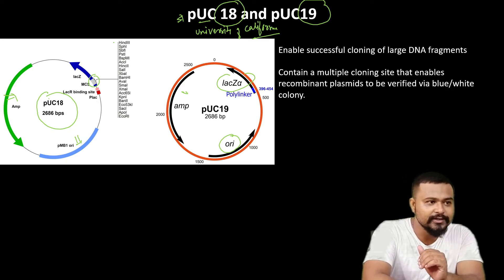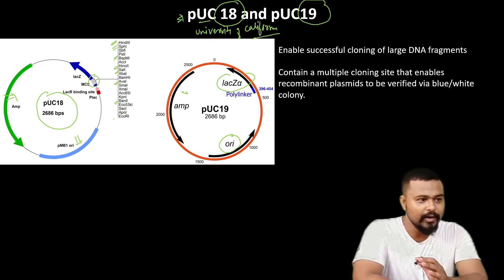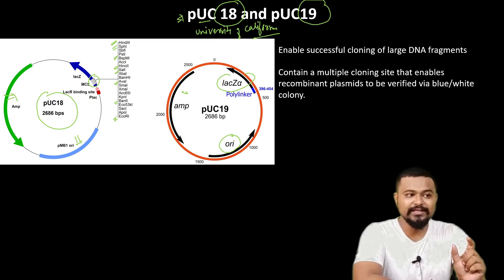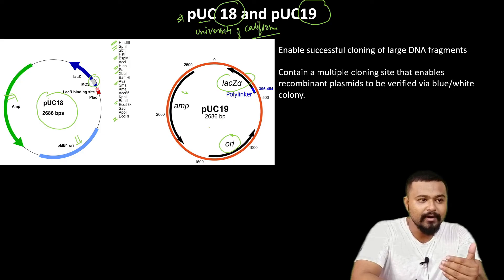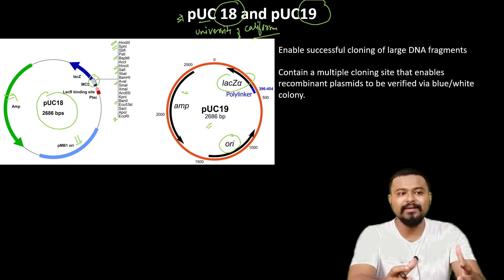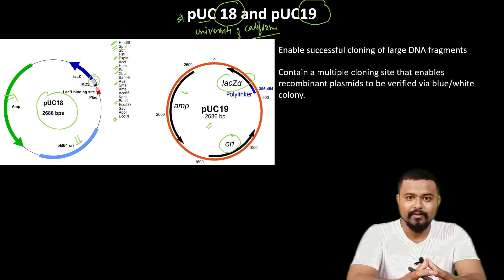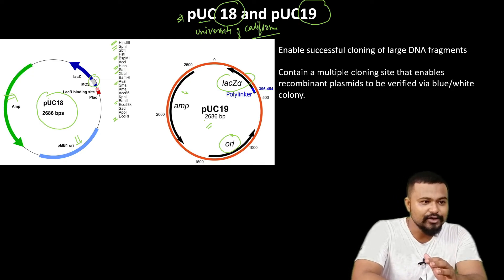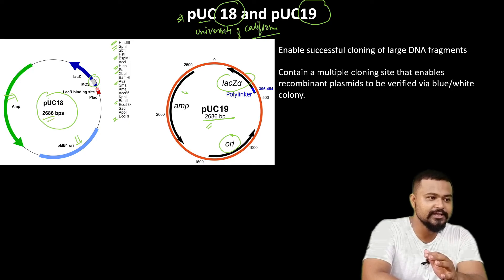The multiple cloning site of pUC-18/19 contains many restriction enzyme sites including HINC3, SPA1, PST1, HINC2, SAL1, AVL, BAN, and ECO-R1 — all within the multiple cloning site. The size of pUC-18/19 is 2686 base pairs.